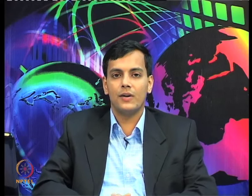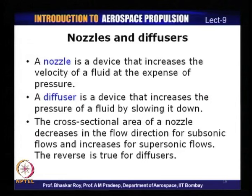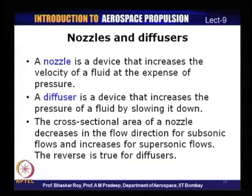The first such device is nozzles and diffusers. A nozzle is a device which increases the velocity of a fluid at the expense of pressure. A diffuser, on the other hand, is a device which increases the pressure of a fluid by slowing it down. So a nozzle and a diffuser are devices which are opposite to each other in terms of their basic function. The cross-sectional area of a nozzle decreases in the flow direction for subsonic flows and increases for supersonic flows.